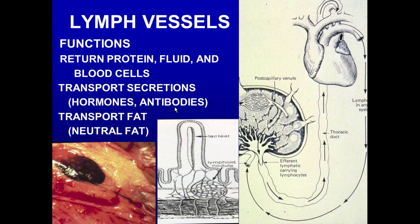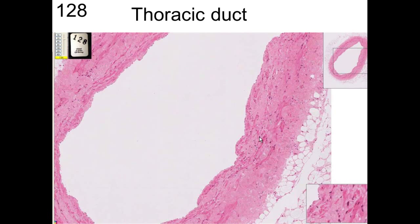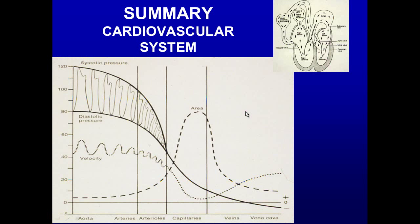The lymph vessels function to return protein, fluid, and blood cells to the blood — whatever leaks out goes to the lymphatics, back to the thoracic duct, and into the bloodstream. They also transport secretions, hormones, and antibodies, and transport neutral fats absorbed from the GI tract. The thoracic duct in humans has a lot of connective tissue and smooth muscle that spirals around it, lined by endothelium.